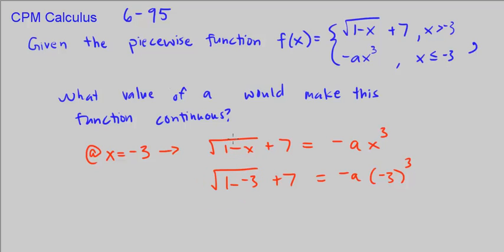This is the square root of 4, so that's 2 plus 7, which is 9. It's equal to negative a times negative 27.